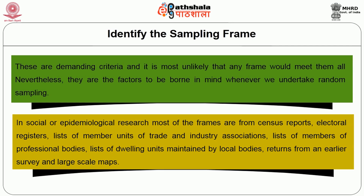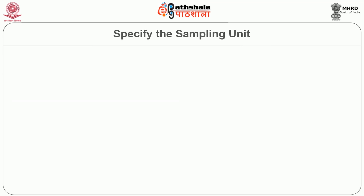In social or epidemiological research, most frames come from census reports, electoral registers, lists of members, units of trade and industry associations, lists of members of professional bodies, lists of dwelling units maintained by local bodies, returns from an earlier survey, and large-scale maps.